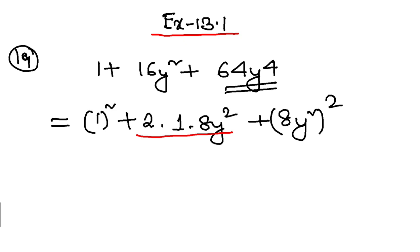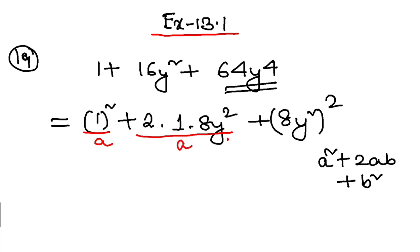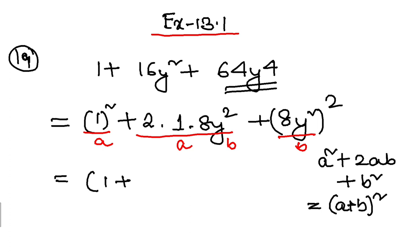This looks like a square plus 2ab plus b square, where this is a, this is 2 into a into b, and this is b square. That means a square plus 2ab plus b square equals a plus b whole square. So the answer is 1 plus 8y square whole square. That's all — very simple. That is question 19.